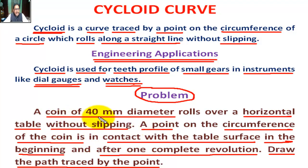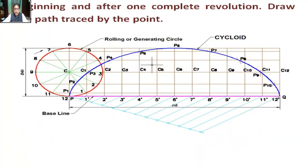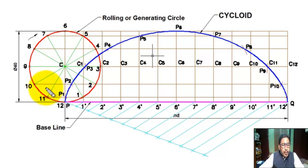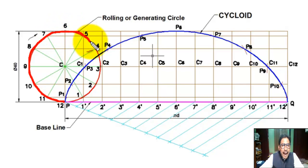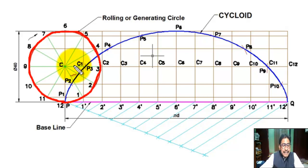The generating circle diameter is 40 millimeter. First, we draw the rolling circle of diameter 40 millimeter, with center C. C is the center of the rolling circle, or generating circle.